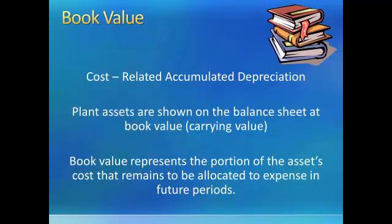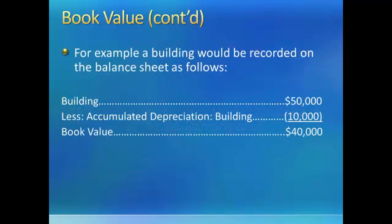The book value is cost minus the accumulated depreciation. Plant assets are shown on the balance sheet at book value, or carrying value, which is cost minus accumulated depreciation. Book value represents the portion of the asset's cost that remains to be allocated to expense in future periods. An example of how the asset would be presented on the balance sheet is provided here: a building with an original cost of $50,000 minus its accumulated depreciation of $10,000 gives us a book value of $40,000.